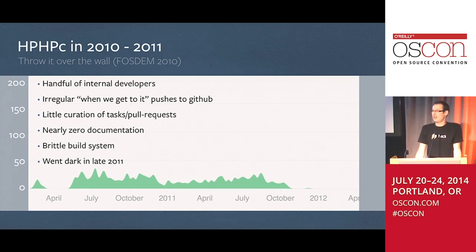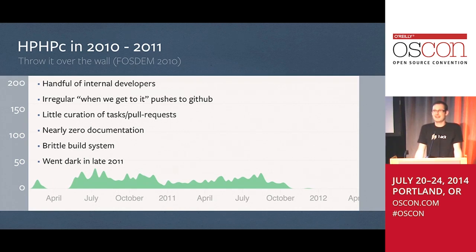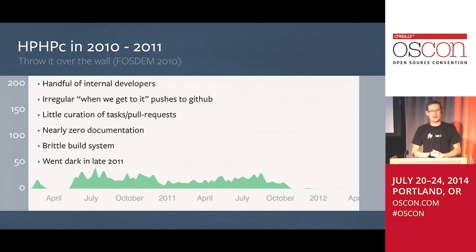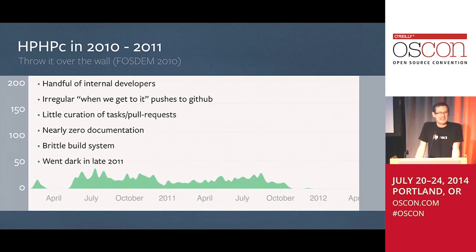In 2010 we launched HPHPC — this crazy cross-compiler that takes PHP, converts it to C++, and then compiles that with GCC. This is mildly insane and I highly recommend you don't use it. Back in 2010 that's what we ran Facebook.com on. It was a quick and dirty hack that worked pretty well, so we threw it over the wall. The build system was a disaster and it didn't get much adoption.